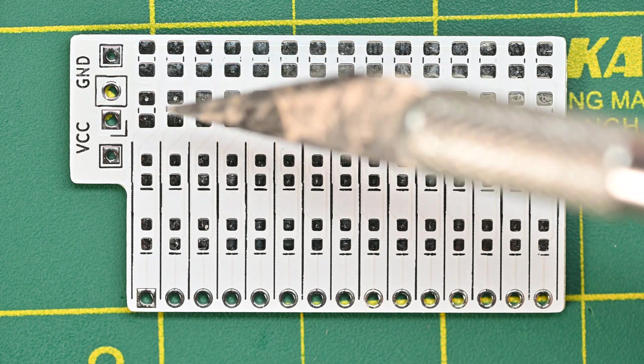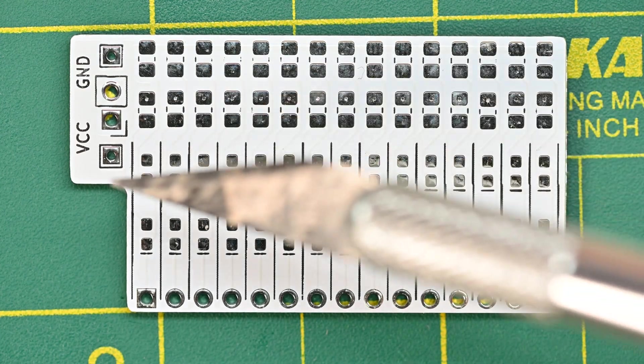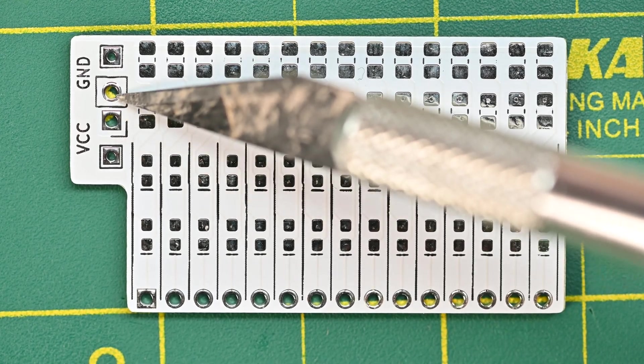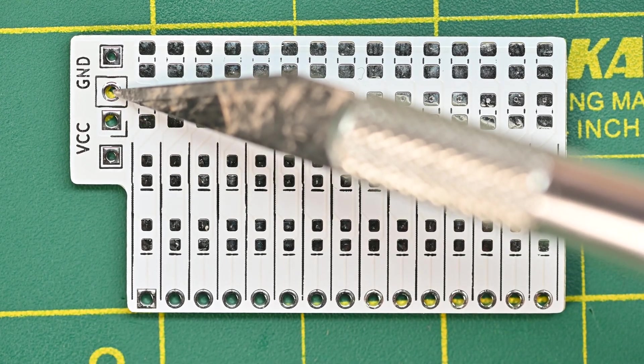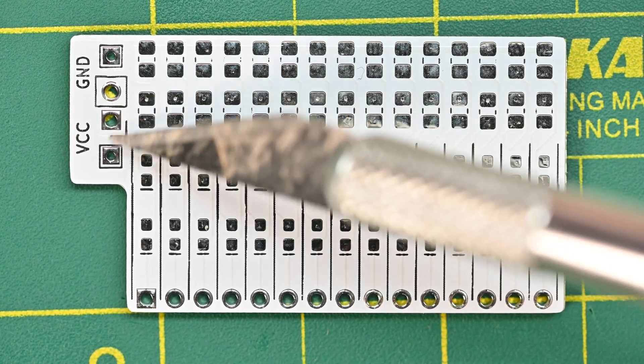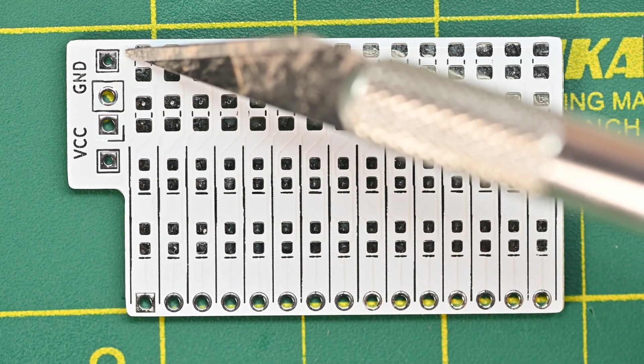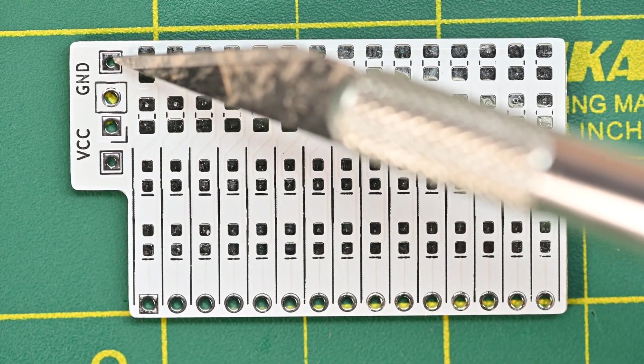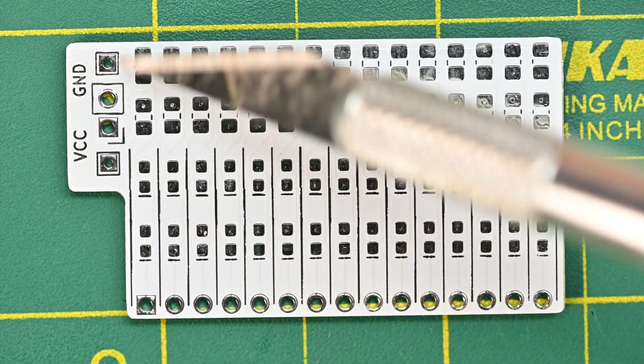Then over here you have a VCC and a ground, so you would connect these up to your microcontroller's VIN or the 3.3 or 5 volt, whatever it may be. Then you have some test pads here to add an extra VCC ground, or if you want to solder in your wires you can solder them into these two.